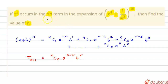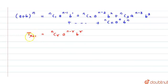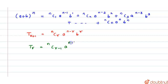In our question we are given that x raised to the power 4 occurs in the rth term of the expansion. So let us write the rth term. If the (r+1)th term is ncr·a^(n−r)·b^r, then the rth term will be nc(r−1)·a^(n−r+1)·b^(r−1).